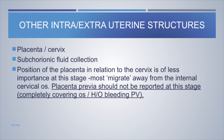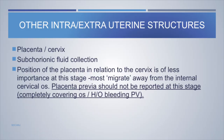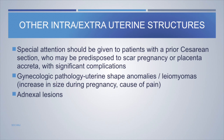Do not forget other intra- or extra-uterine structures: placenta, cervix, and any subchorionic fluid collections. Placenta position relative to the cervix is less important at this stage, as most placentas migrate away from the internal os. Placenta previa should not be reported unless it completely covers the os or there is a history of bleeding PV. Special attention should be given to patients with prior caesarean section, who may be predisposed to scar pregnancy or placenta accreta. Other gynecologic pathologies such as uterine shape anomalies, leiomyomas, and adnexal lesions should also be assessed.